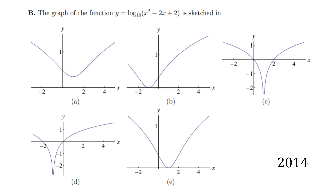We're now looking at a multiple choice question from 2014, asking which of five graphs is the graph of y = log₁₀(x² − 2x + 2). We need to think about what the log₁₀(x) graph looks like and also investigate the quadratic x² − 2x + 2.